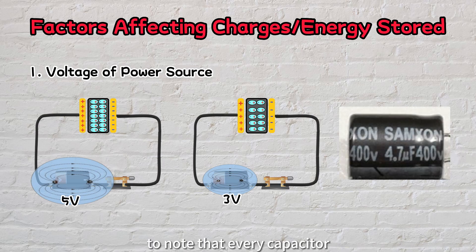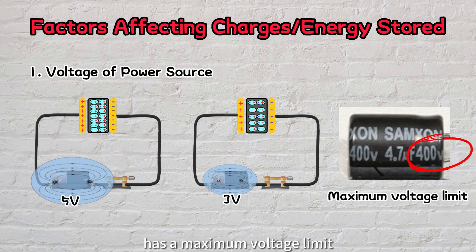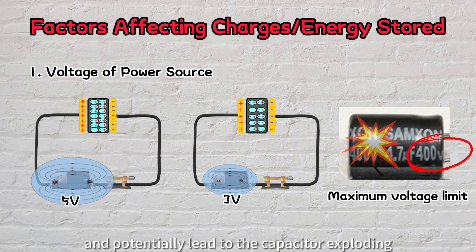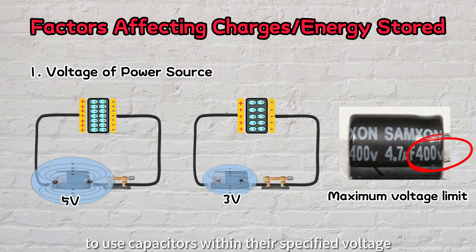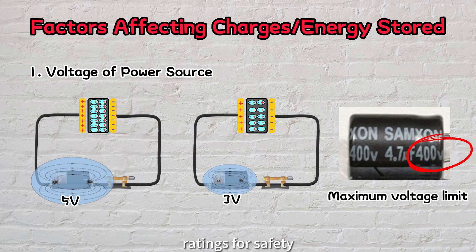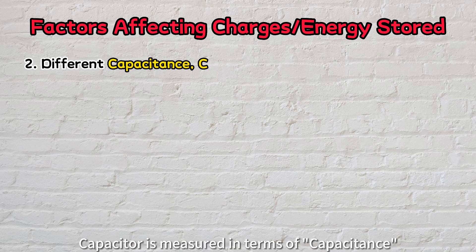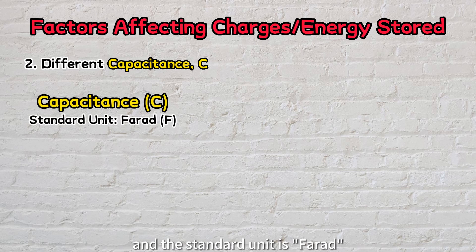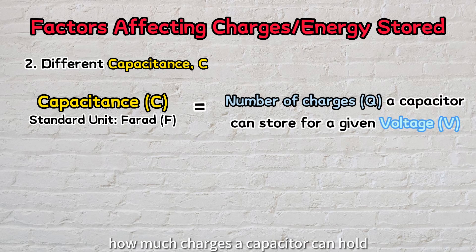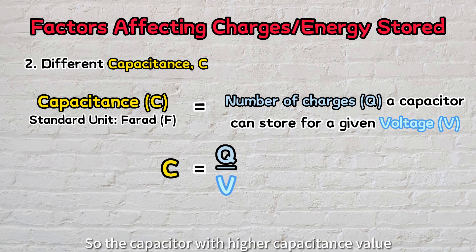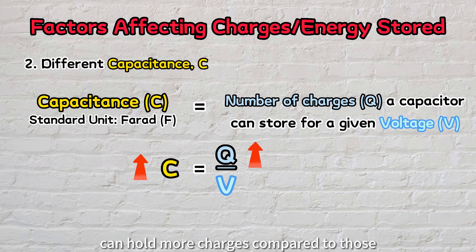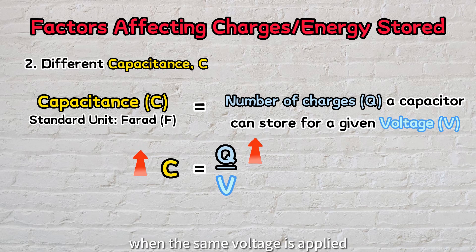However, it is important to note that every capacitor has a maximum voltage limit. Exceeding the limit can cause the dielectric to break down and potentially lead to the capacitor exploding. So it's crucial to use capacitors within their specified voltage ratings for safety. In cases where the same voltage is applied, different capacitor designs will store different amounts of charge. Capacitance is measured in terms of capacitance, and the standard unit is farad. Basically, capacitance tells us how much charge a capacitor can hold for a given voltage, so a capacitor with a higher capacitance value can hold more charges compared to those with lower capacitance when the same voltage is applied.